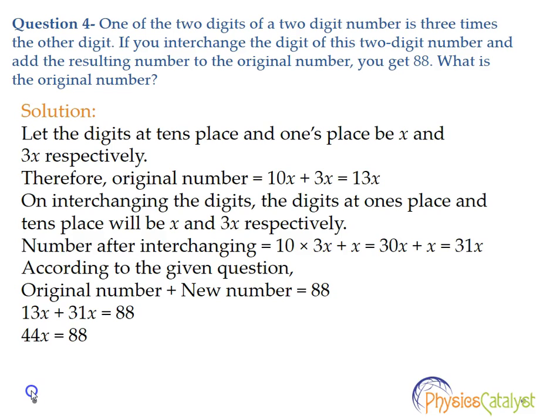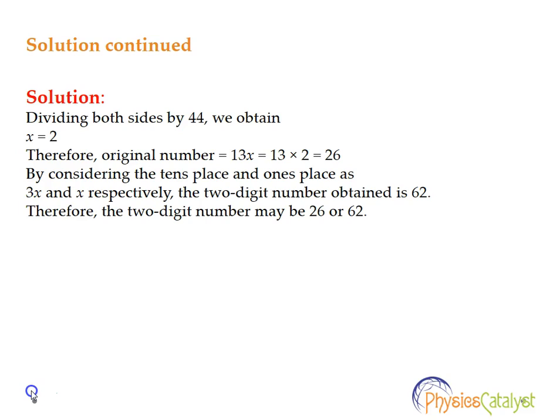According to the given question, original number + new number = 88. So 13x + 31x = 88, which gives 44x = 88. Dividing both sides by 44, we obtain x = 2.